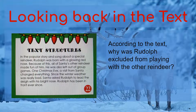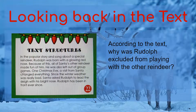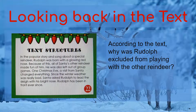According to the text, why was Rudolph excluded from playing with the other reindeer? If we look here, it says he was also left out of group games. That's what being excluded means — he was left out. So now I want to know why was he left out, and I'm going to look at the sentences around this. It says Rudolph was born with a glowing red nose. Because of this, all of Santa's other reindeer made fun of him. He was also left out of group games. So because he had a glowing red nose, they teased him and they excluded him. There's my answer right there.